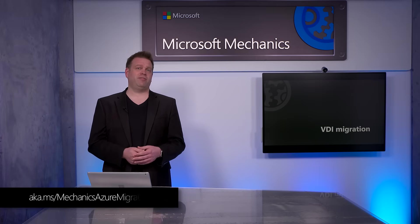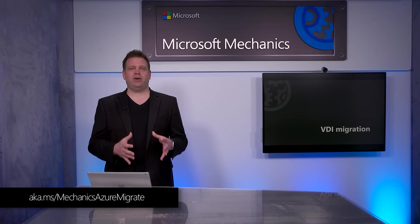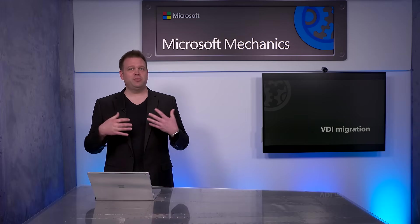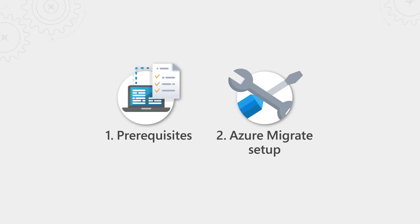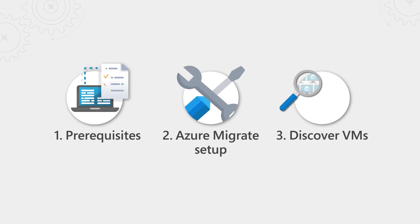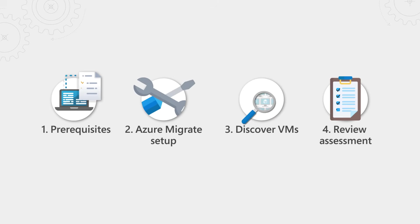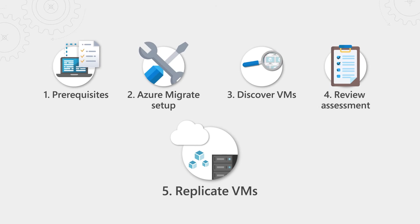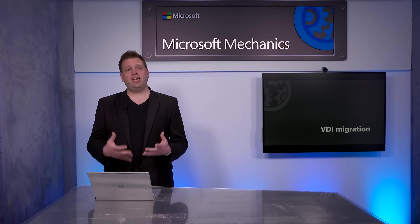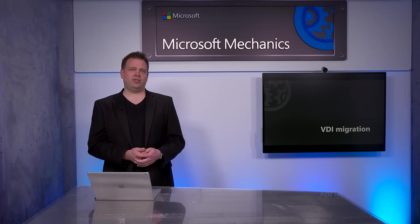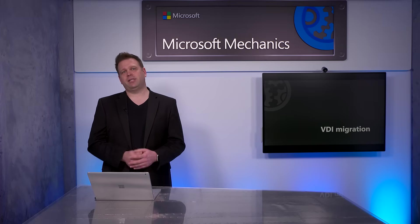If you saw our last how-to for Azure Migrate for migrating servers at aka.ms/mechanics-AzureMigrate, that process to migrate persistent client VMs shares many of the same steps. First, we're going to set up the prerequisites, then set up Azure Migrate, discover the different VMs and their composition, review the assessment, and if you're bringing over persistent VMs, you'll replicate them, test your migration, and finally migrate them to production. This process uses the same Azure Migrate Server Migration tool for replication, testing, and the production migration, which also works for client operating systems.